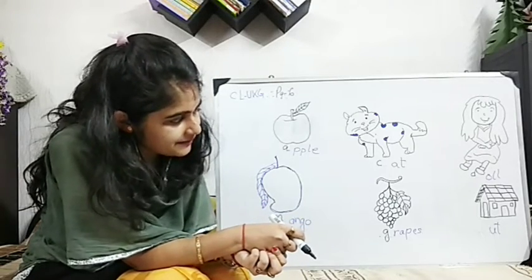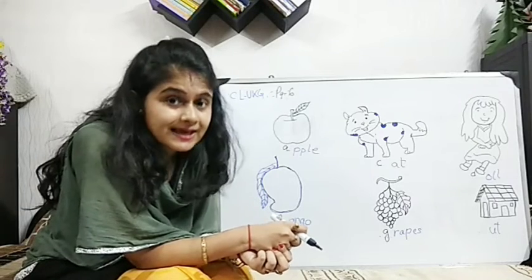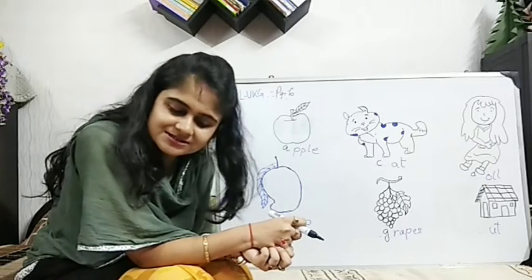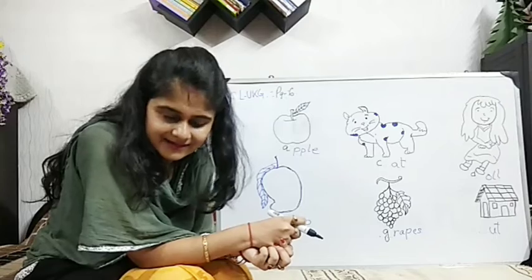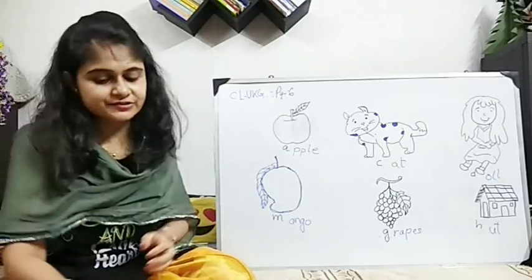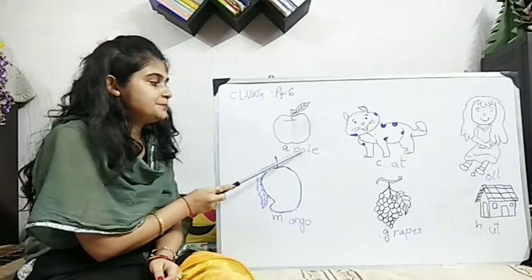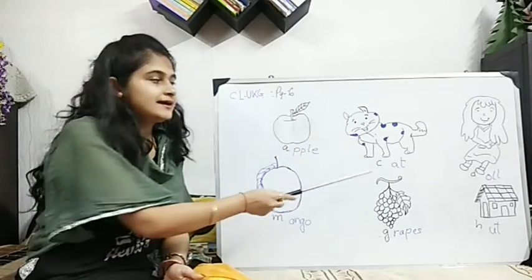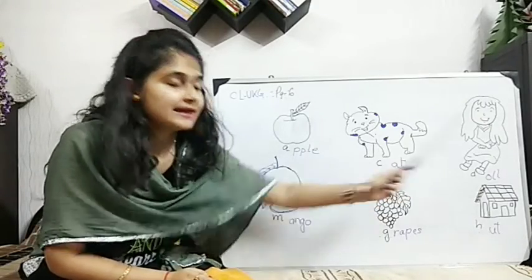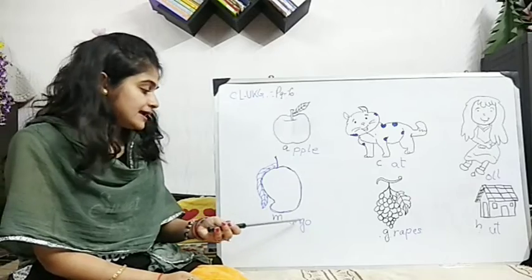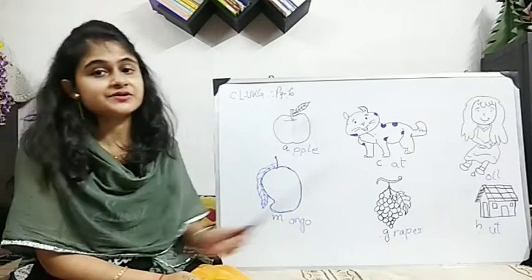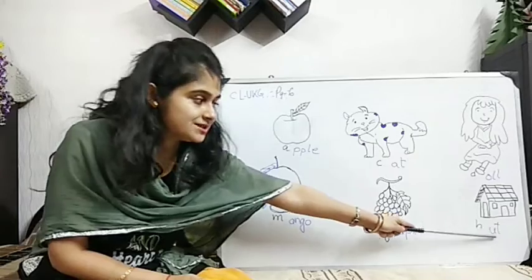And the last picture — what is given? H-U-T, HUT. See? Mixture colors are given — orange is there, yellow is there, brown is there, right? It's looking so nice. So write down H-U-T, HUT, okay? Now let's repeat. First one: A-P-P-L-E, apple. Second one: C-A-T, CAT. Third one: D-O-L-L, DOLL. Fourth one: M-A-N-G-O, mango. Fifth: G-R-A-P-E-S. And the last one: H-U-T, HUT.